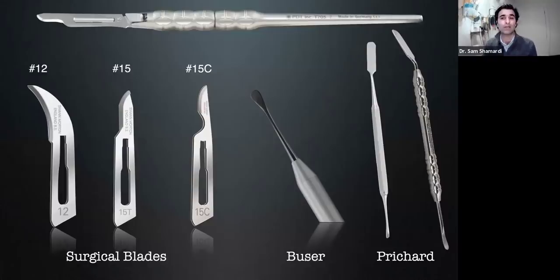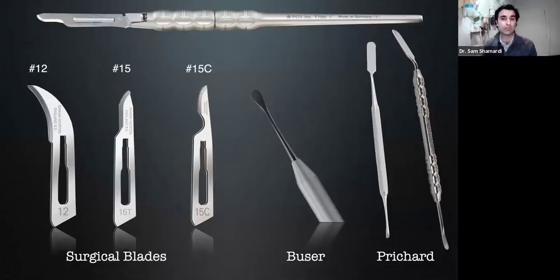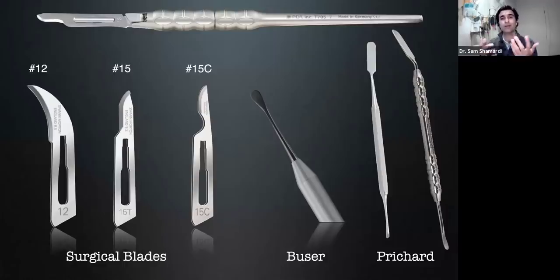Our friends from PDT have taken this a step further — they provide a great scalpel holder that will put a 15 or any blade on there, and the end of that blade holder will actually tilt and angle itself down. So you can essentially have a 15 blade that almost looks and acts like a number 12 blade because of its ability to curve. Depending on where you're working in the mouth, this can really come into great dividends for you.